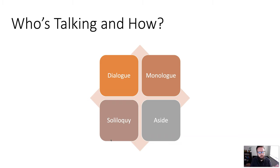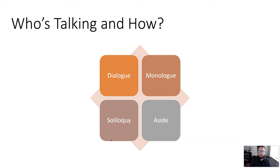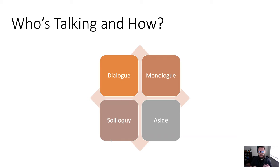Finally, there are asides, which are used in a number of ways. Sometimes an aside is directed between characters — for example, in Macbeth, Banquo says an aside to Macbeth despite other people being on stage, and we understand only Macbeth can hear him. An aside might also be a villain turning to say 'now she's in my power' — the other actors on stage heard it, but we understand the other characters didn't.